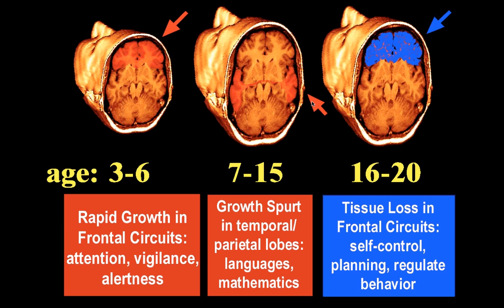The first brain areas to mature are those with the most basic functions — processing senses and movement. Areas involved in spatial orientation and language, in the parietal and temporal lobes, follow around ages seven to fifteen. Areas with more advanced functions involving higher order integration — the prefrontal cortex — really undergo maturation between ages 16 to 20. It's a late-maturing structure.